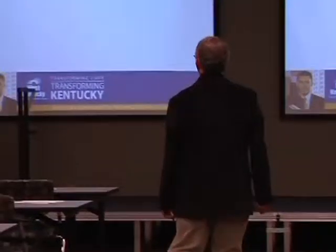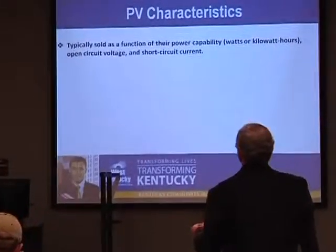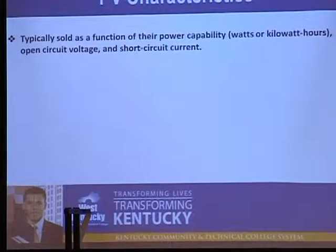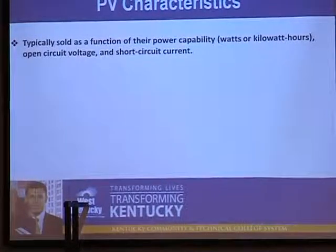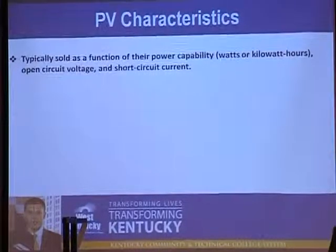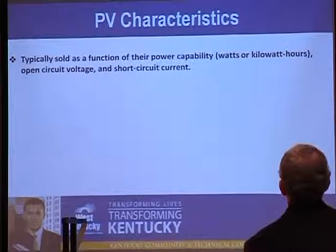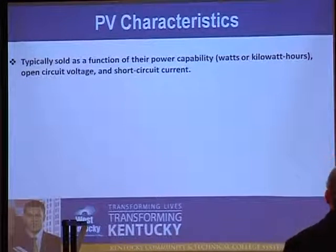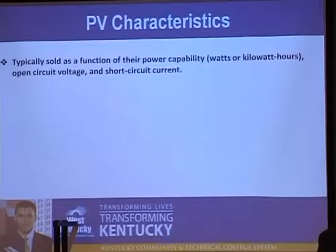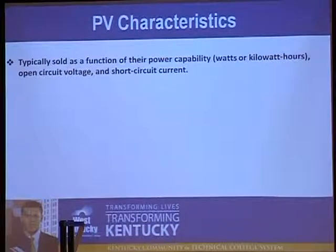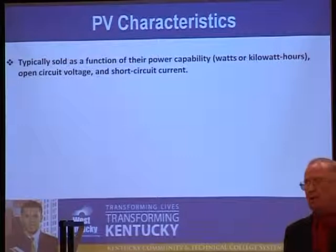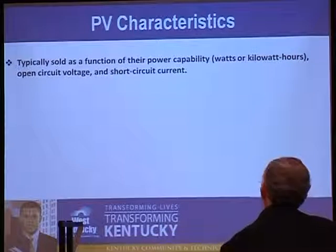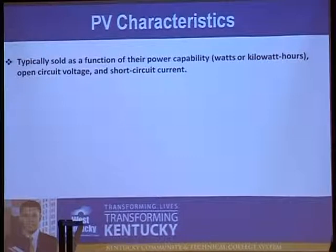If you were to go online to buy one of these, or go to your local photovoltaic array discount house, they're typically going to be sold as a function of power or energy capability — in terms of watts, or in the case of energy, kilowatt hours. Kilowatt hours is what you pay for in your light bill. Sometimes they're sold in terms of nominal values of voltage and current capability, and sometimes you'll see something called open circuit voltage or short circuit current.